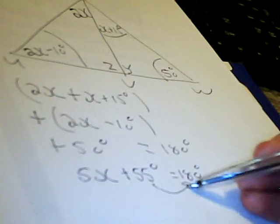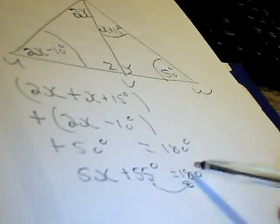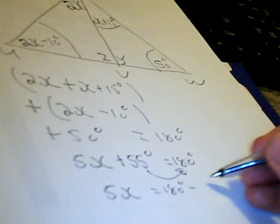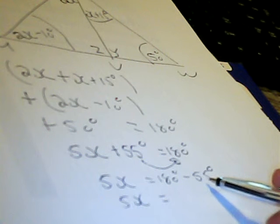Now we can do a bit of swimming. The 55 degrees crosses the river. It comes from dry to wet, so the sign changed. So we have 5X equals 180 degrees minus 55 degrees. 180 minus 50 is 130, but we still have to subtract another 5, so it's 125 degrees.